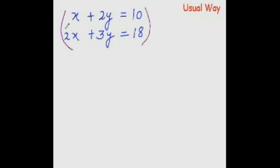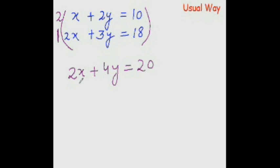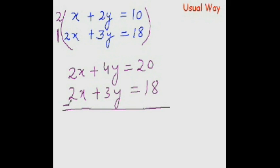We eliminate a variable by making the coefficients equal — basically we cross-multiply the coefficients. The coefficient of x here is 2, so I multiply by 2, and the coefficient of this x is 1. So 2 times x is 2x, 2 times 2y is 4y, and 2 times 10 is 20. Multiplying the second equation by 1 gives 2x plus 3y equal to 18. Now to eliminate, subtract — change the sign. So 2x minus 2x cancels out, 4y minus 3y is y, and 20 minus 18 is 2, so y equals 2.